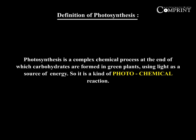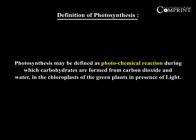Photosynthesis is a complex chemical process at the end of which carbohydrates are formed in green plants using light as a source of energy. So it is a kind of photochemical reaction. Photosynthesis may be defined as a photochemical reaction during which carbohydrates are formed from carbon dioxide and water in the chloroplasts of the green plants in presence of light.